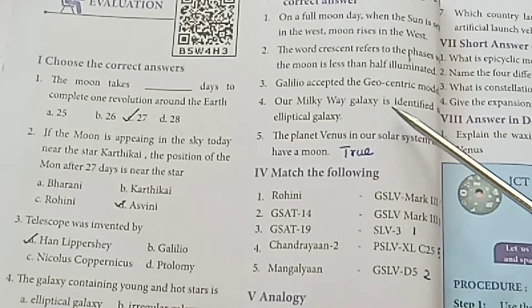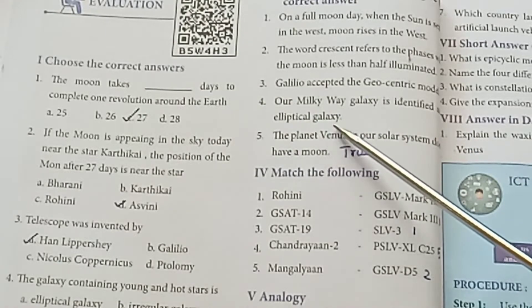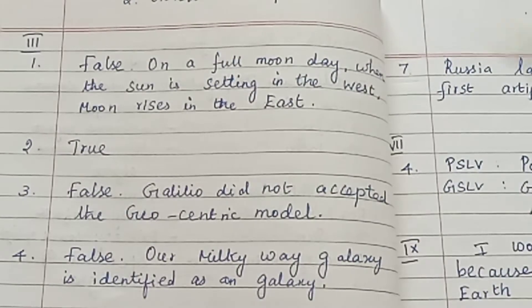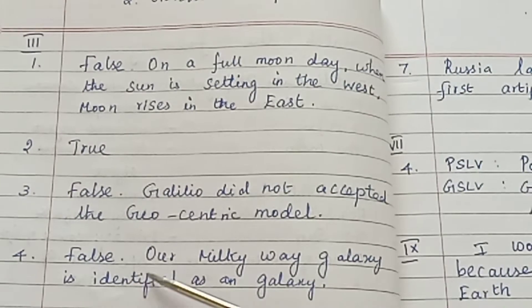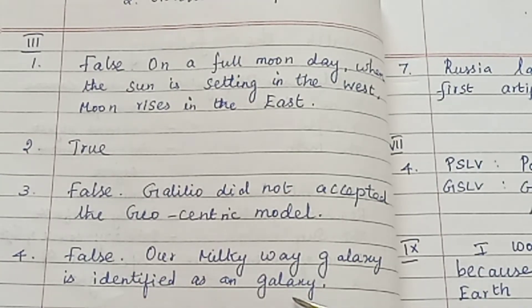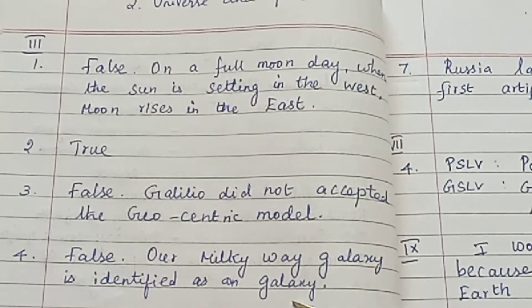Question 14: Our Milky Way galaxy is identified as an elliptical galaxy. Answer: False. Our Milky Way galaxy is identified as a spiral galaxy.